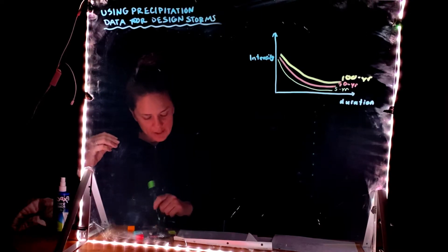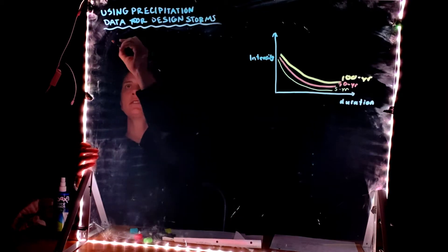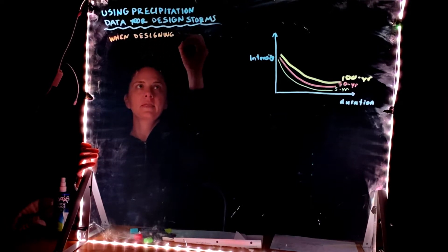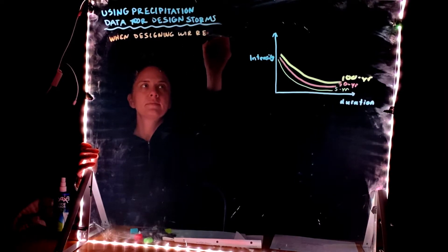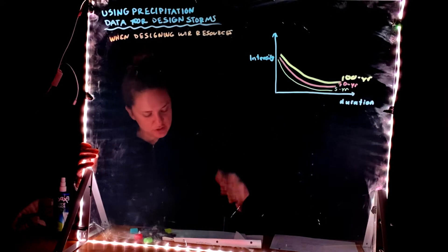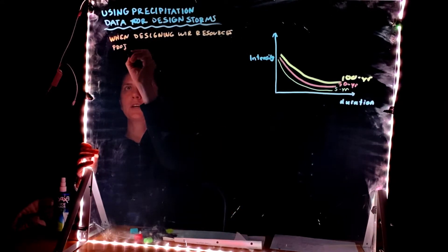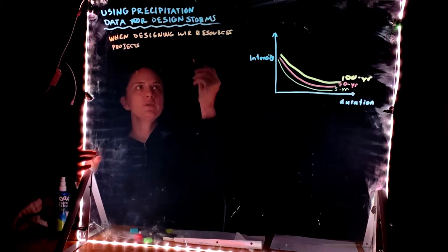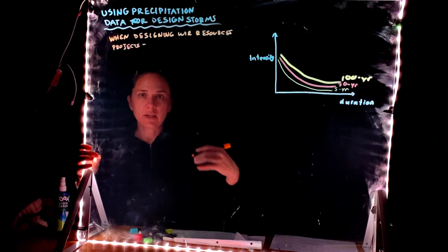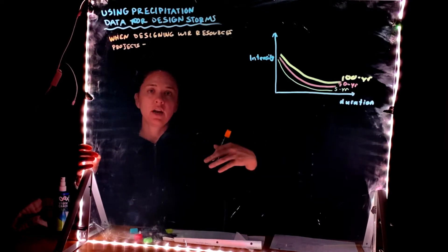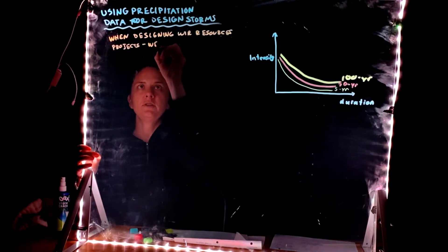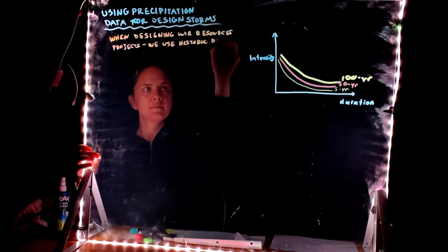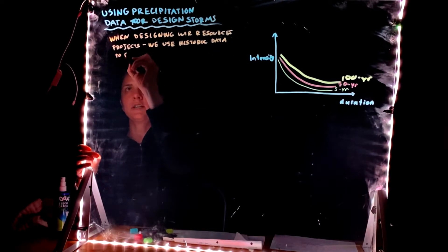When you are designing water resource projects, and again when you think about these water resource projects think back to those four questions that I introduced at the beginning of the quarter. So we're talking about how much water, where the water is going to come from that we need, where the excess water is going to go. So when we're designing water resource projects the only way that we can do this design is to have some estimate for how much precipitation to expect. So in order to do that we use historic data to estimate or predict what's going to happen in the future.